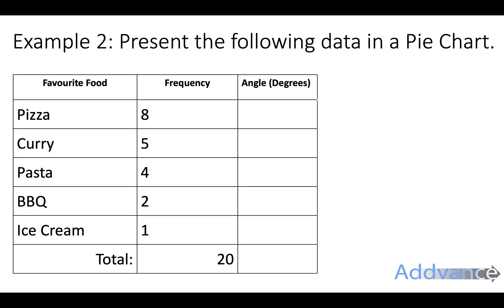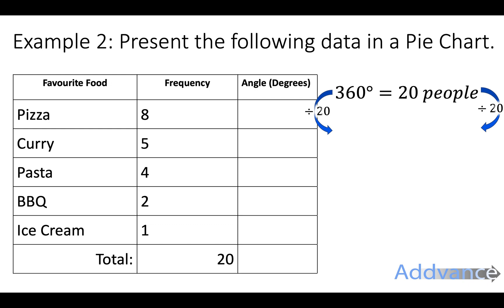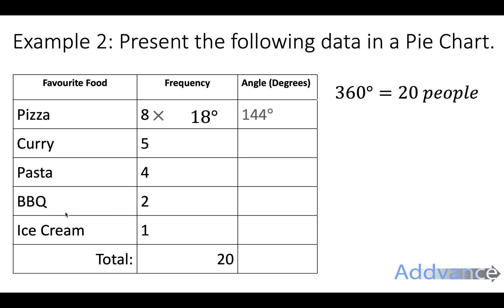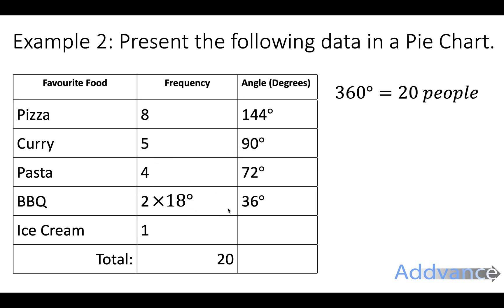For the angles, we realize that 360 degrees represents 20 people. So to find out what one person is, we divide by 20 and get 18 degrees per person - use your calculator for this of course. So 8 people is represented by 8 times 18, which is 144 degrees. 5 times 18 is 90. 4 times 18 is 72. 2 times 18 is 36. And one person who likes ice cream is represented by 18 degrees. You can check that all these add up to 360 degrees - that's a good check to make sure you haven't made a mistake.